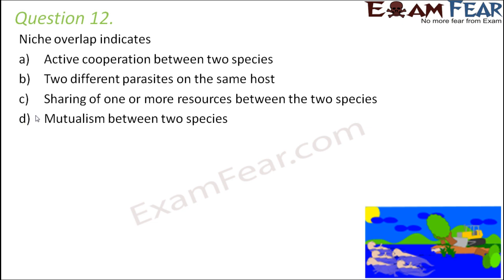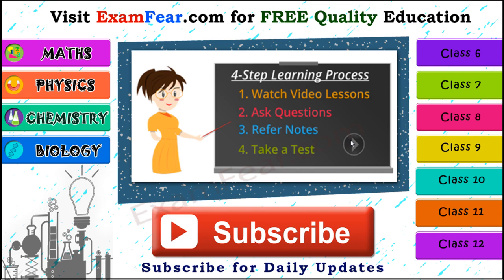Question number 12. Niche overlap indicates: active cooperation between two species, two different parasites on the same host, sharing of one or more resources between two species, or mutualism? Niche overlap means multiple species sharing the same niche or habitat, which means they are also sharing the resources present in that habitat. So niche overlap indicates sharing of one or more resources between two species.